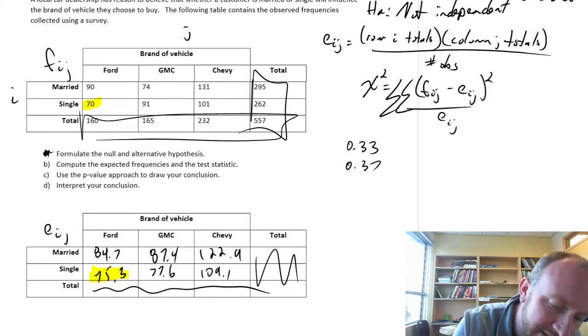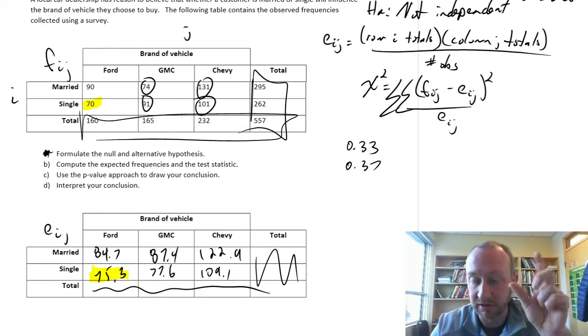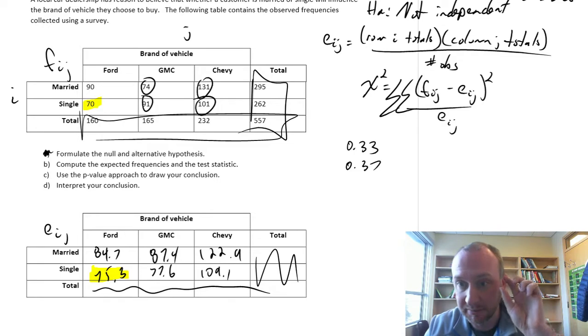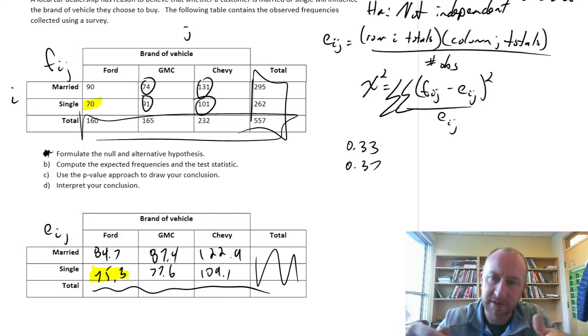Okay, so we do the same for this, and this one, and this one, and this one. Comparing always the corresponding expected frequency with each of those observed frequencies. We take all those differences, we square them, the same process.